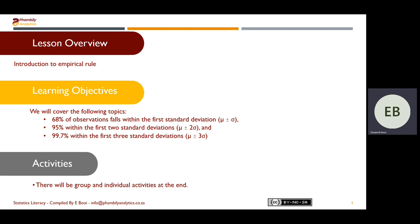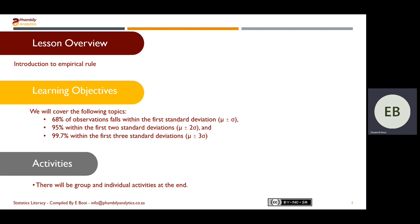We'll look at where your data falls within one, two, and three standard deviations. You will notice on the screen right now we're using the population parameters, but later on when we do the activities you will see that I'm using the sample parameters. You need to be aware that sometimes they will give you population data and sometimes sample data — you just interchange the formulas. Feel free to pause the video at any point, do the activity on your own, then come back and reflect on the answers.